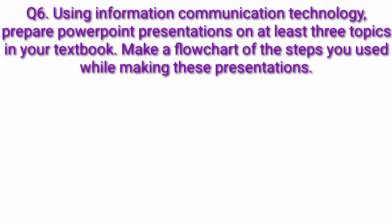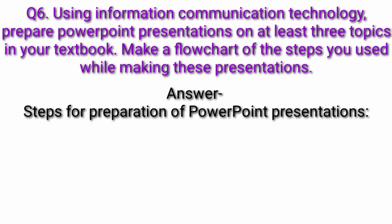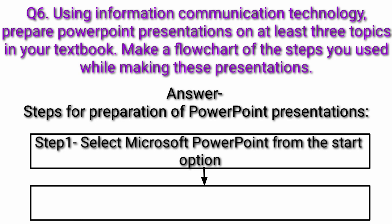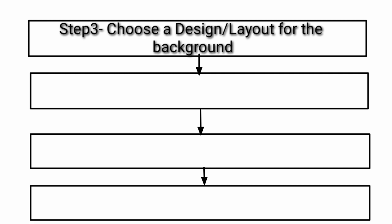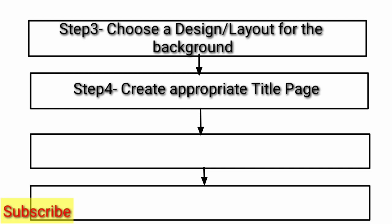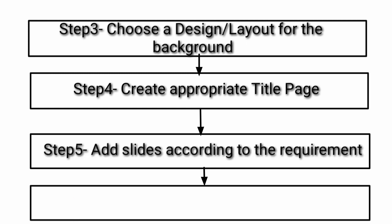Question 6: Using information communication technology, prepare PowerPoint presentations on at least 3 topics in your textbook. Make a flowchart of the steps you used while making these presentations. Answer: Steps for preparation of PowerPoint presentations. Step 1: Select Microsoft PowerPoint from the start option. Step 2: Create a new file from a program command. Step 3: Choose a design layout for the background.